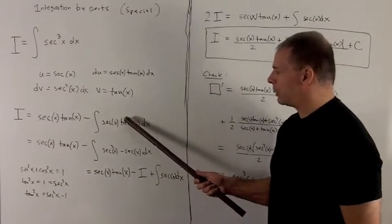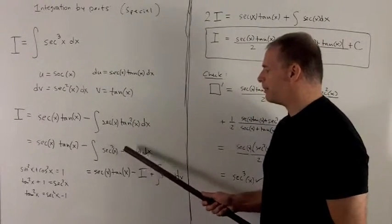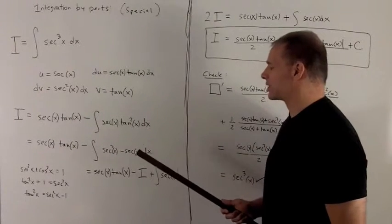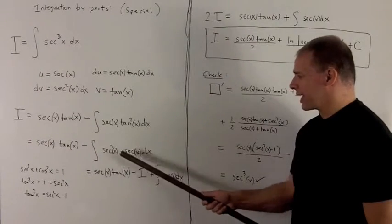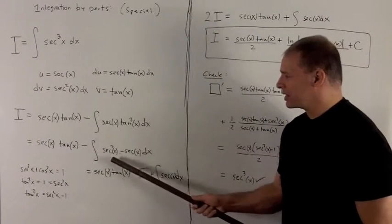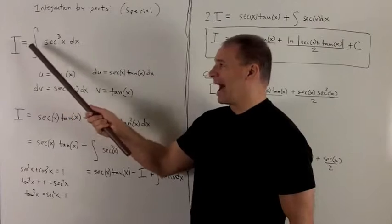So this term here is going to turn into secant cubed x minus secant x dx. We rewrite things out, and we notice having this secant cubed here is just going to be the original thing I'm calling i.